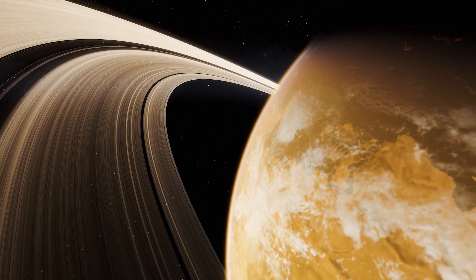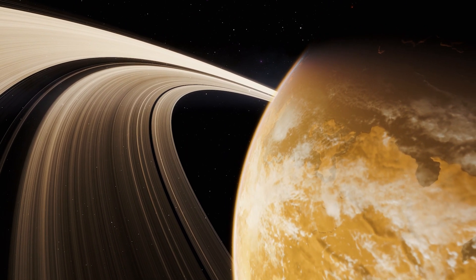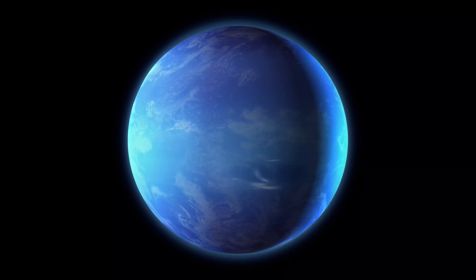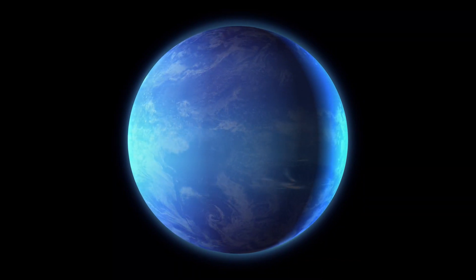Ring system. Saturn is famous for its stunning rings, but did you know that Jupiter, Uranus, and Neptune also have ring systems? Each planet's rings have their own unique characteristics.